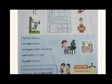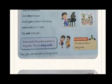Now you can see the definition given here. Some words tell us what a person or thing does. They are doing words, and we call them in English grammar as verbs. All sentences have a doing word. Without the doing word, we cannot make a sentence. For example, play, goes, eat, and walk are doing words.